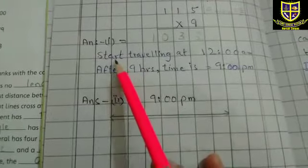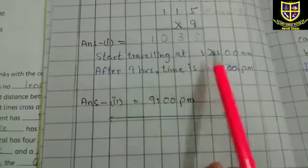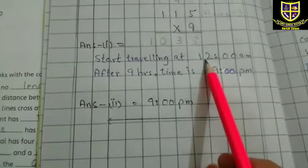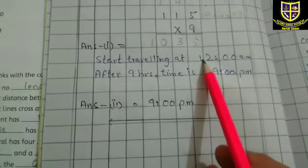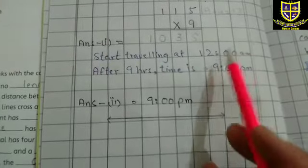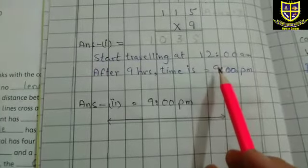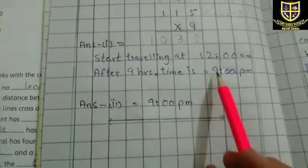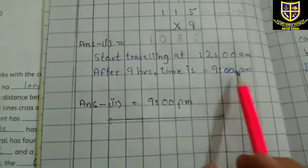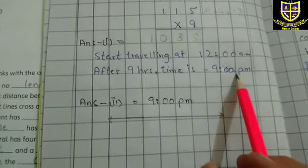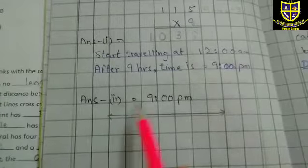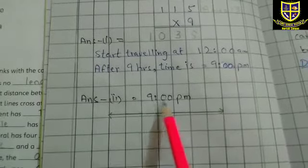اسی طرح اگر starting time 12 am ہے، یعنی دوپہر کے بارہ بجے start ہوا، تو بارہ کے بعد گاڑی میں دوبارہ one start ہوتا ہے۔ اس میں nine hours plus کریں گے تو یہ رات کے nine pm پر سفر ختم ہوگا۔ Answer: nine pm۔